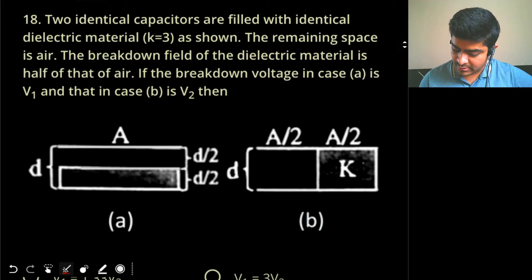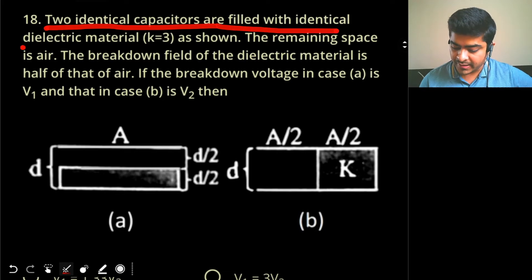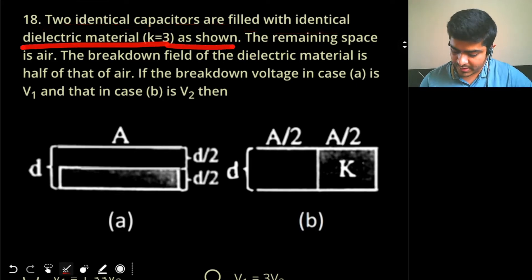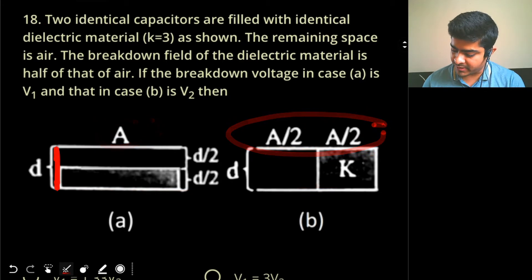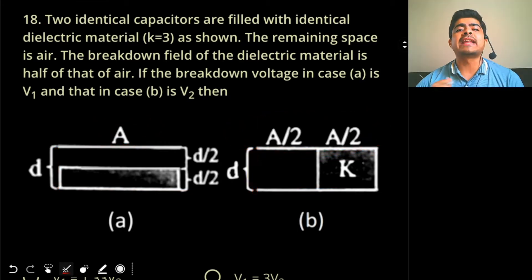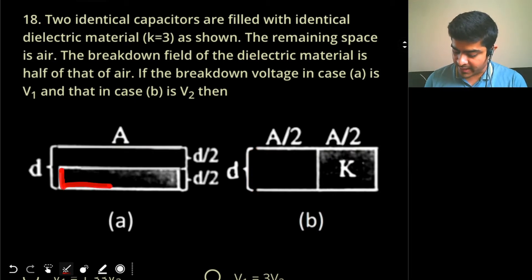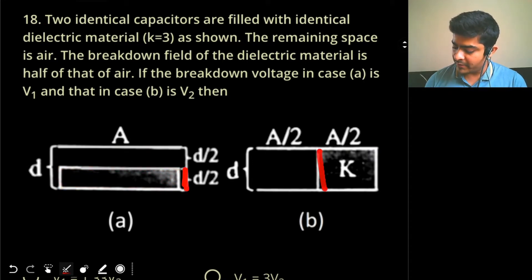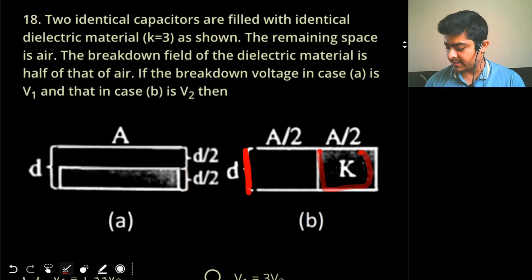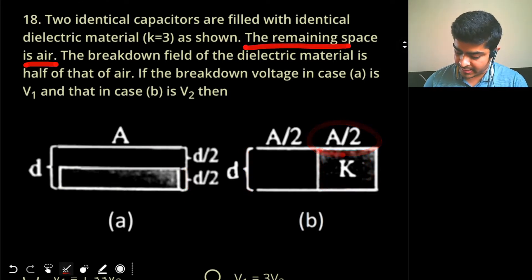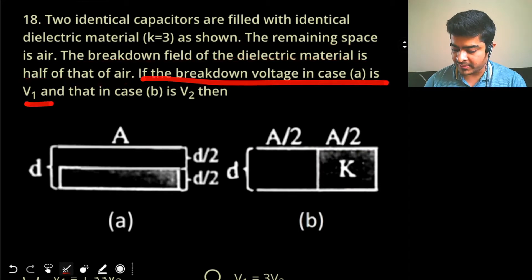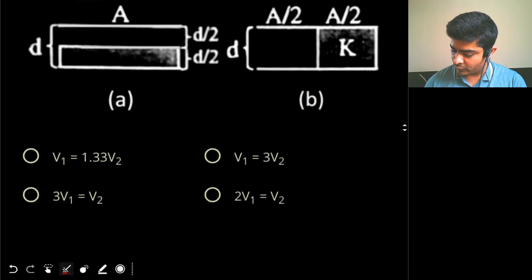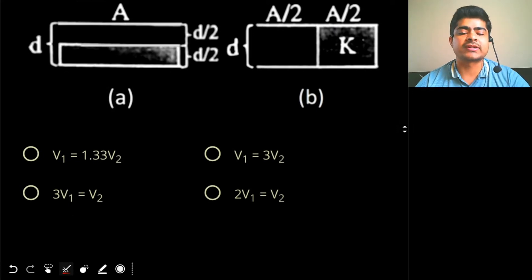This question involves two identical capacitors filled with identical dielectric material k equal to 3. Both capacitors have the same total area A and plate separation D. In case A, the dielectric fills the complete area but only half the width (D/2); in case B, the dielectric fills the complete width but only half the area, with the remaining space being air. The breakdown field of the dielectric is half that of air. If the breakdown voltage in case A is V1 and in case B is V2, which of the four options are correct?